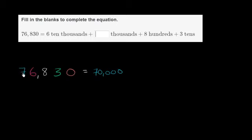The 7 is in the ten thousands place, so it's 7 ten thousands, which is 70,000. The 6 is in the thousands place, so it's 6,000 or 6 thousands, plus 800.